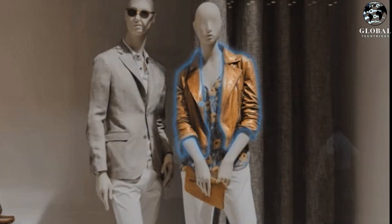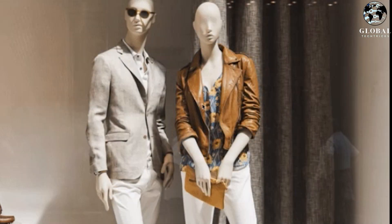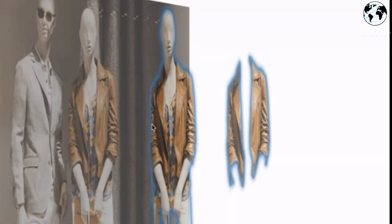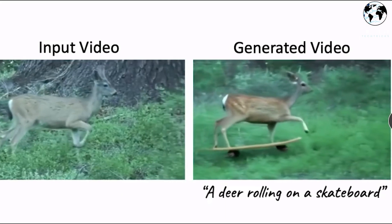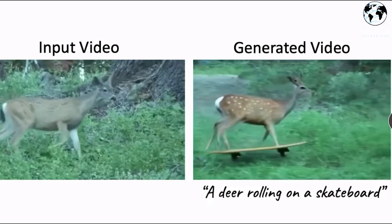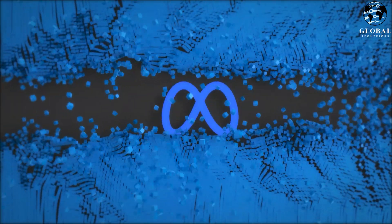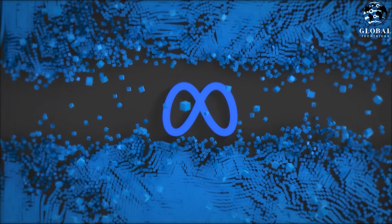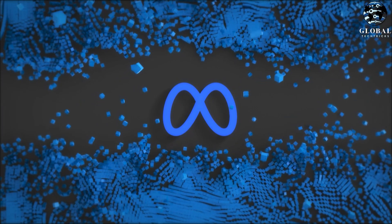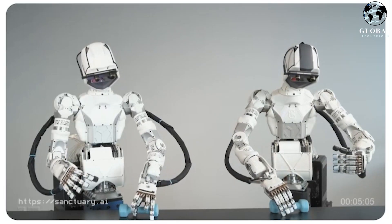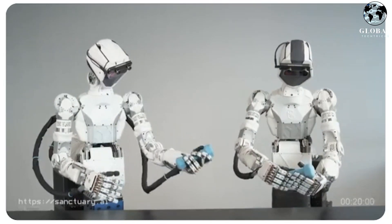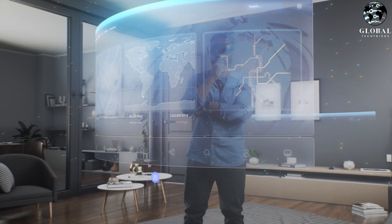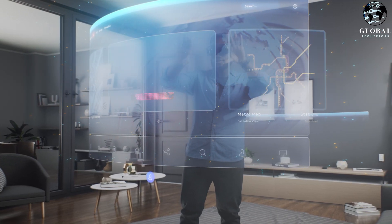This type of AI is a critical task in computer vision and machine learning, as it allows machines to identify and classify different objects in an image. With this technology, it becomes possible to automate tasks such as object detection, tracking, and recognition, which have a wide range of applications in various industries — from healthcare, to retail, to transportation.